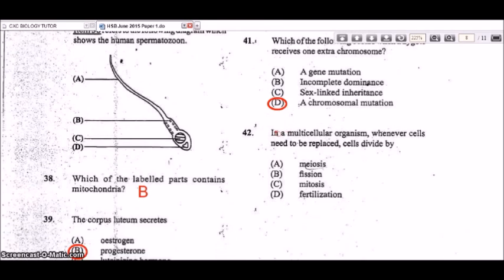Question 42: in a multicellular organism, whenever cells need to be replaced, cells divide by mitosis. Mitosis produces identical daughter cells and is necessary for growth, repair, and asexual reproduction. So mitosis, answer C, is correct.